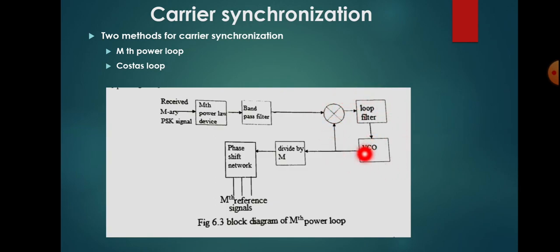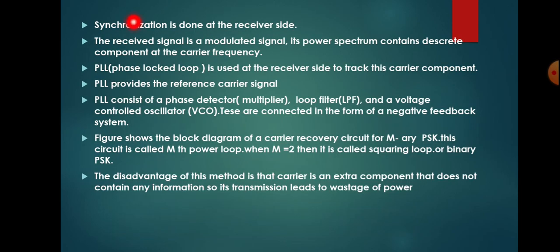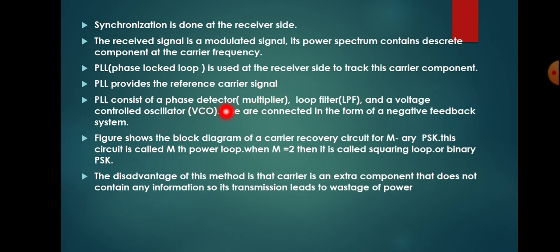The phase comparison process takes place here. After phase locking is achieved, the output of the voltage controlled oscillator is given to a divide-by-M frequency divider network, then to a phase shift network, so that we obtain the Mth reference signal. The synchronization is done at the receiver side. The received modulated signal's power spectrum contains discrete components at the carrier frequencies. The PLL is used at the receiver side to track this carrier component and provides the reference carrier signal.